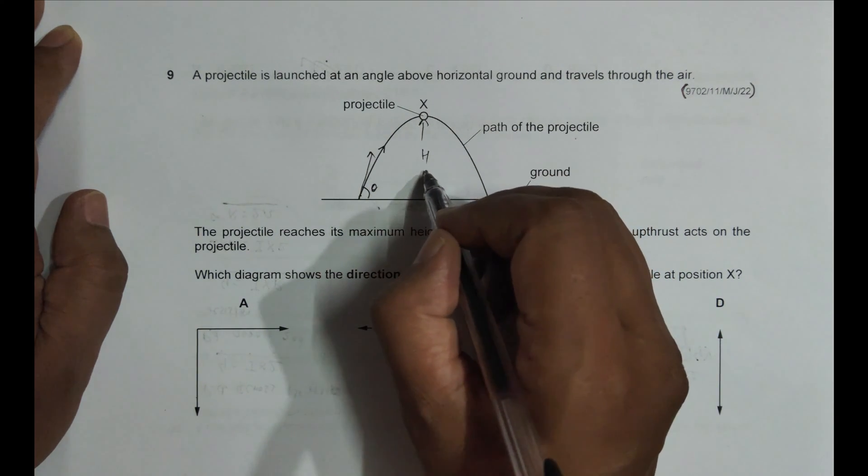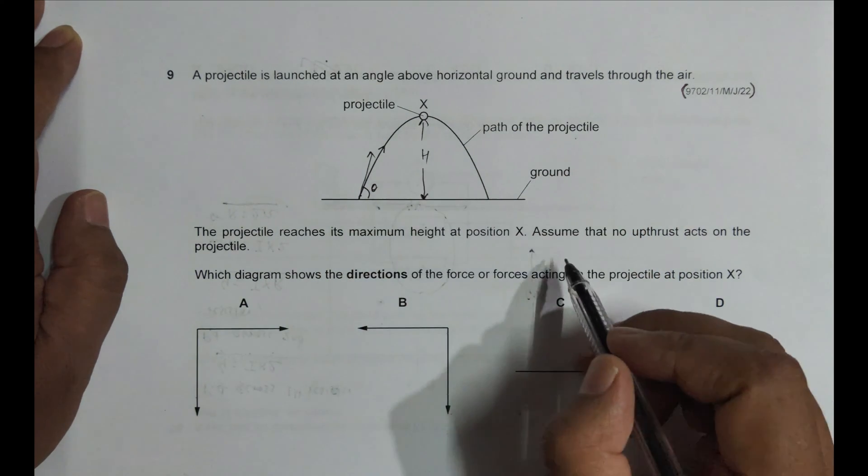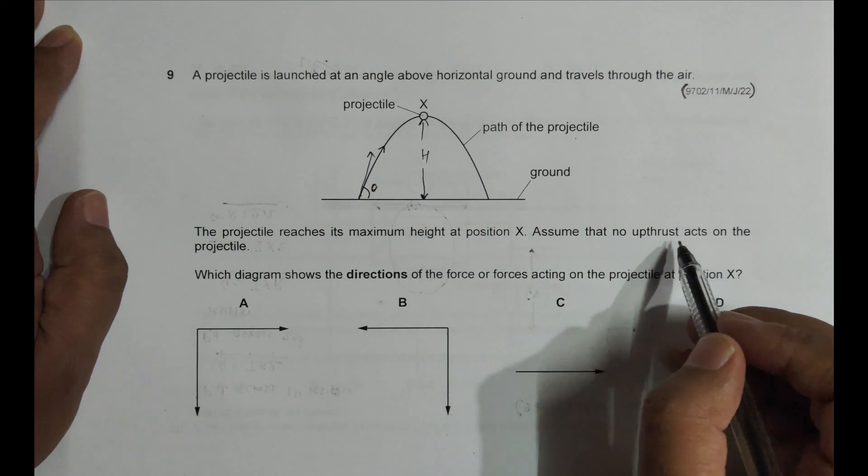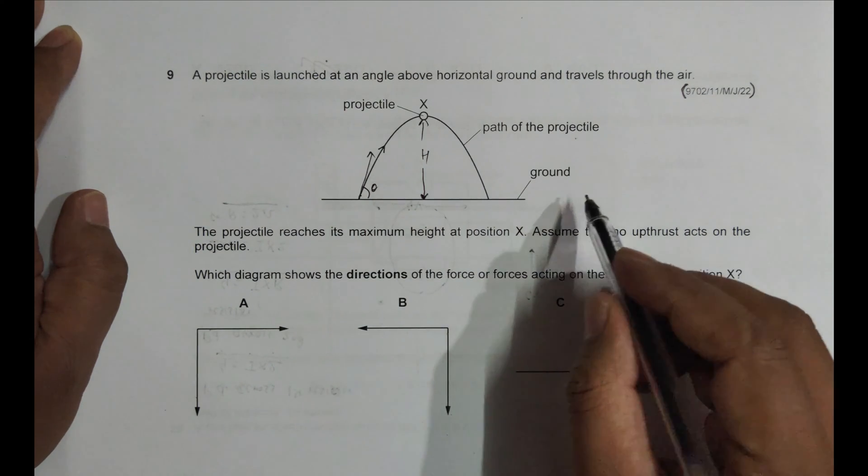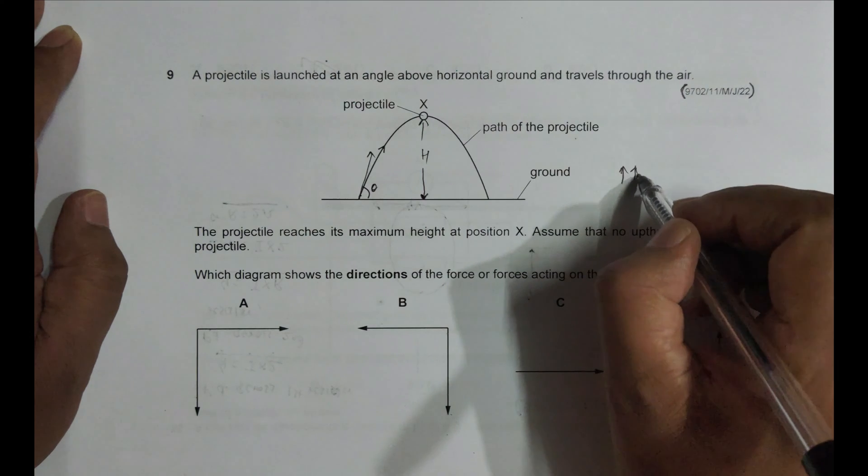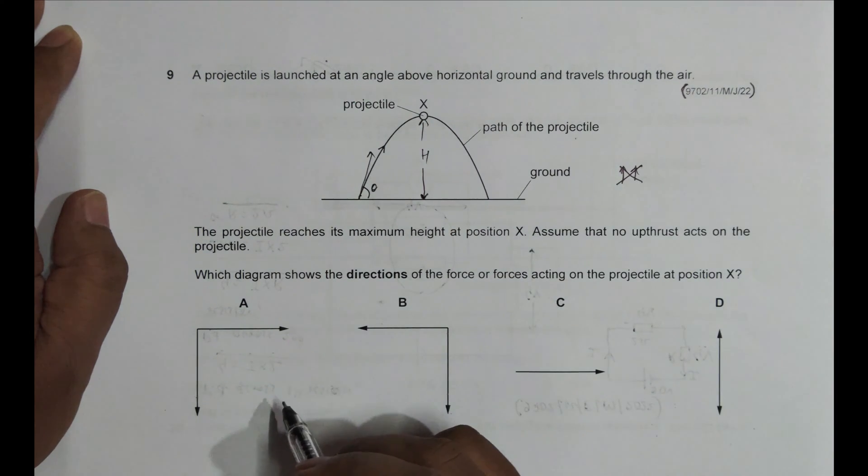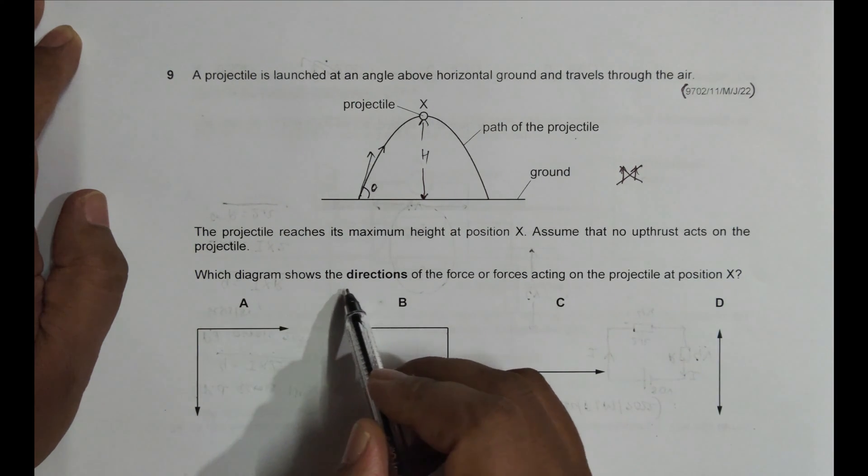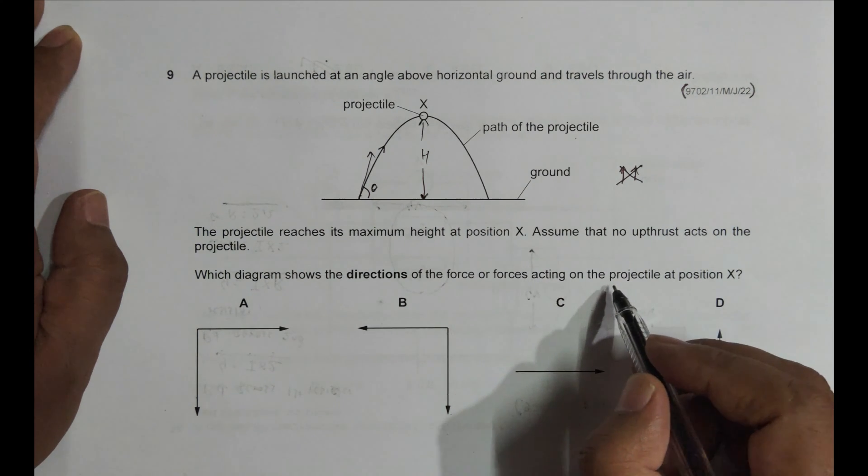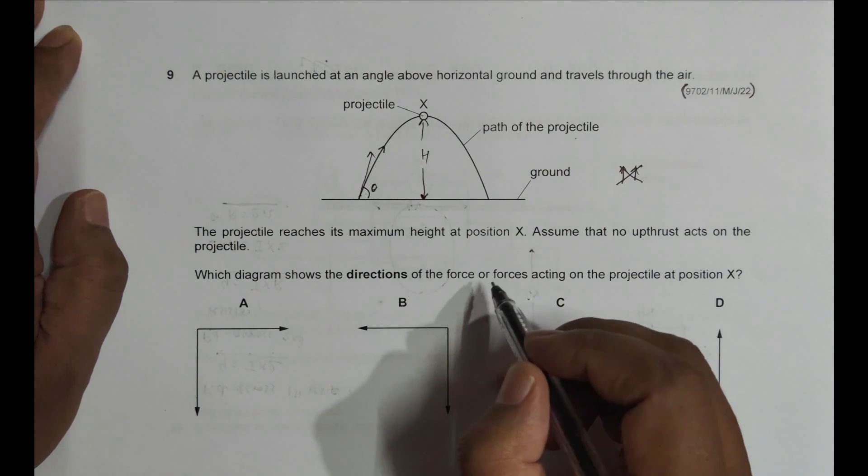So here the height is max, which we often denote by the symbol H. Assume that no upthrust acts on the projectile, so the upthrust of the air has been neglected. Which diagram shows the directions of the force or forces acting on the projectile at point X?